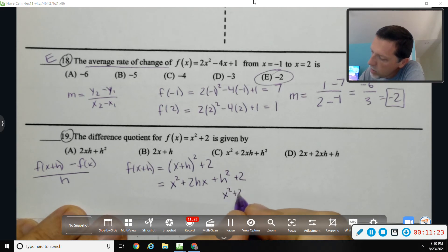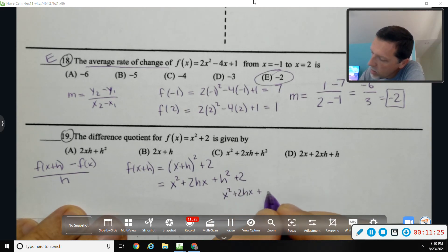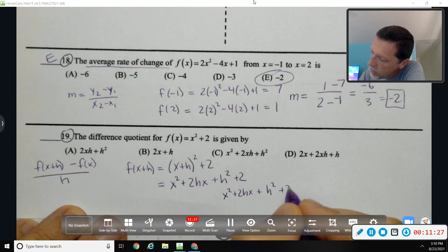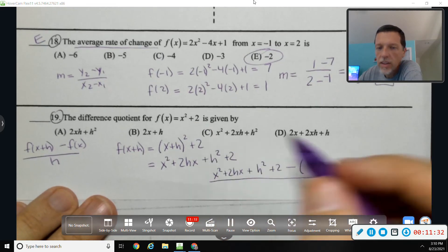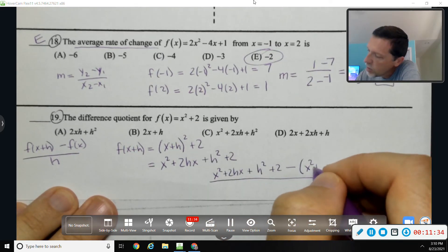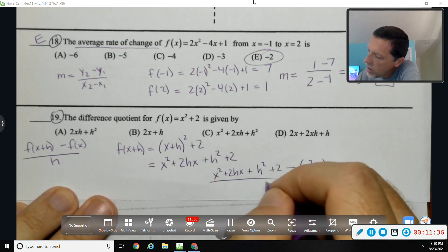So x squared plus 2hx plus h squared plus two minus f of x, which is x squared plus two, all over h.